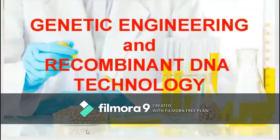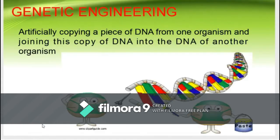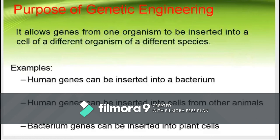In this video, I will be discussing the processes involved in genetic engineering and some applications of recombinant DNA technology. Genetic engineering involves manipulating genes in order to make useful products. It is concerned with simple addition, deletion, or manipulation of a single trait in an organism to create a desired change. At the molecular level, it is copying a piece of DNA from one organism and joining this copy into the DNA of another organism, allowing genes from one organism to be inserted into a cell of a different species.